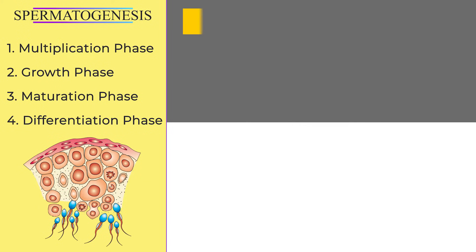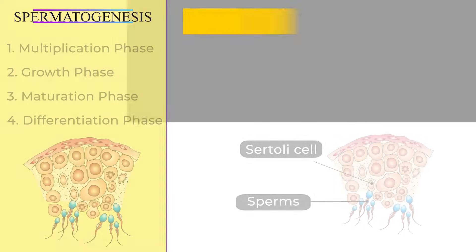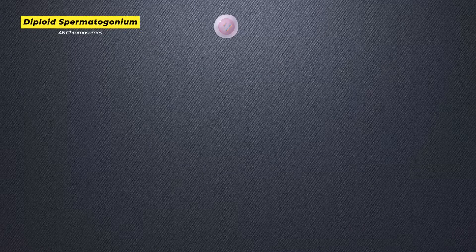During the differentiation phase, spermatocytes are transformed into spermatozoa through spermiogenesis. The sperms become embedded in the Sertoli cells and are finally released from the seminiferous tubules by a process called spermiation. Now, for better understanding, take a look at the schematic representation of spermatogenesis.